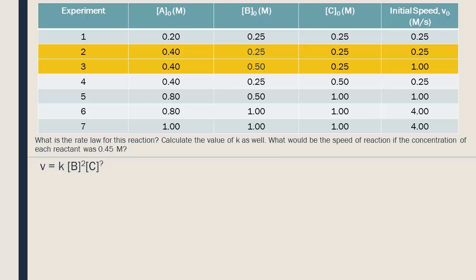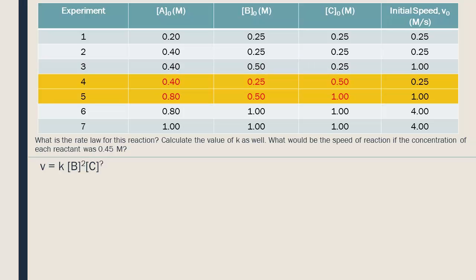Now let's find a case where C is isolated. From the third to fourth experiment, B and C change, so that doesn't work. From the fourth to fifth experiment, all the concentrations change, which is also not good. We can also look at lines that are not adjacent. Let's compare the second and fourth experiments. Between these two, A and B don't change, but the concentration of C doubles. The speed, however, is not affected. So, C is not part of the rate law.